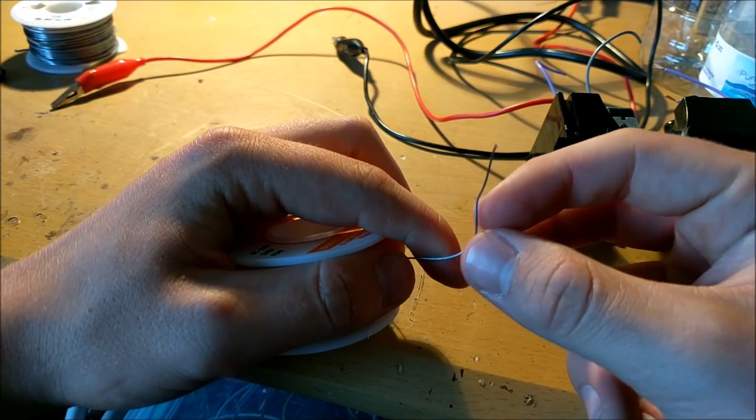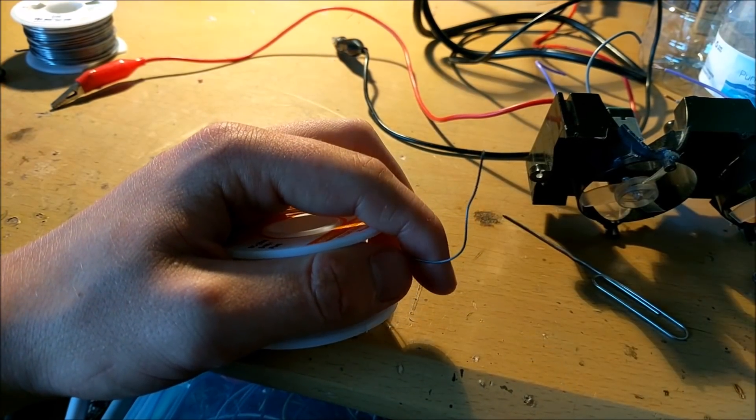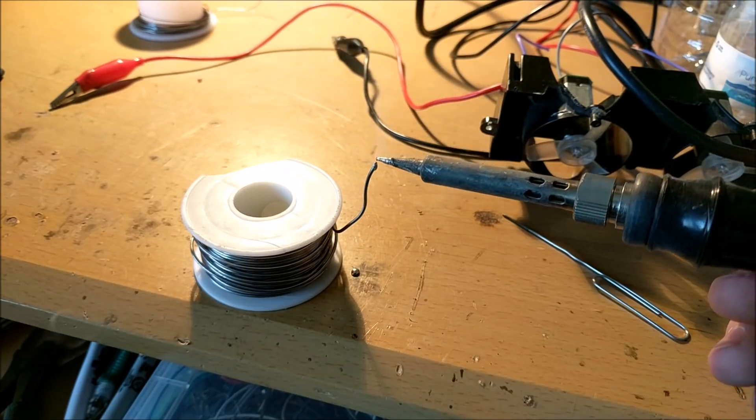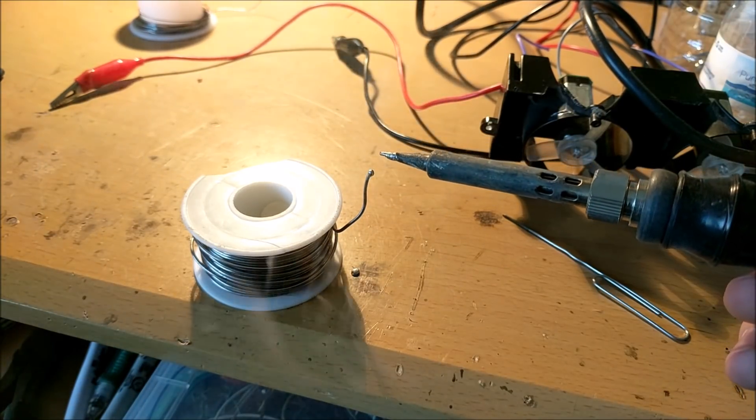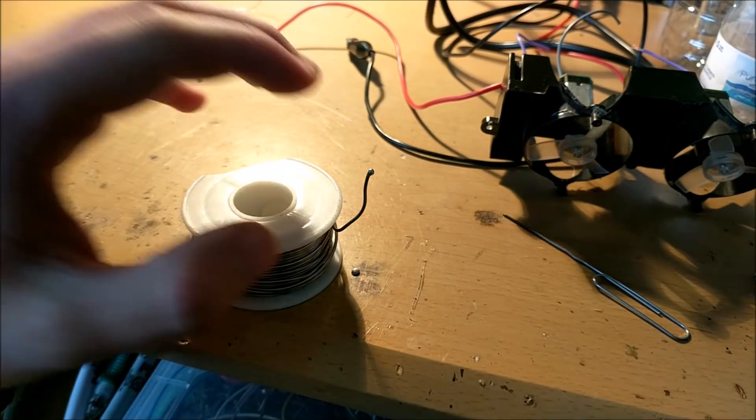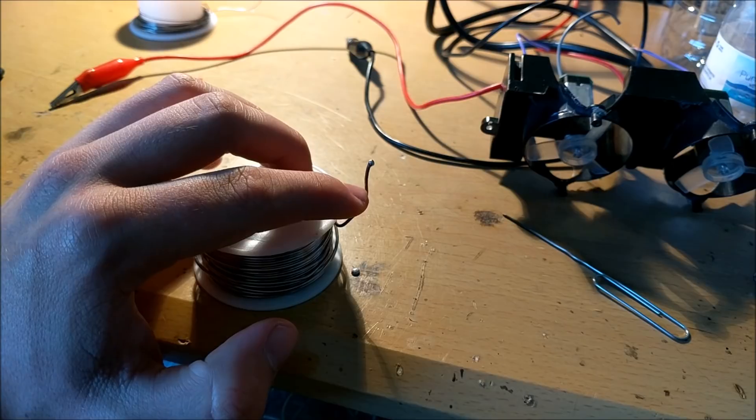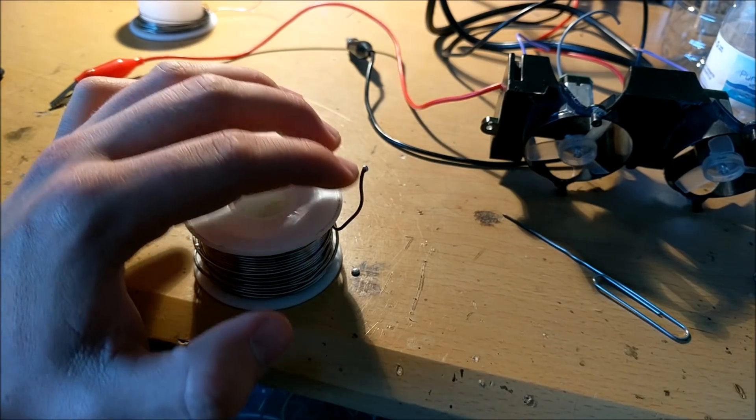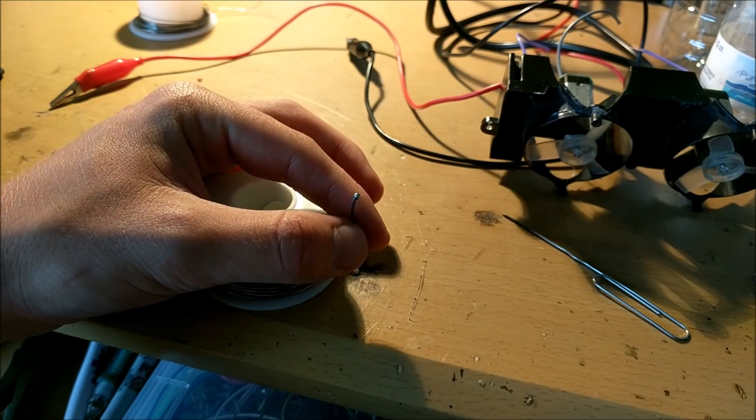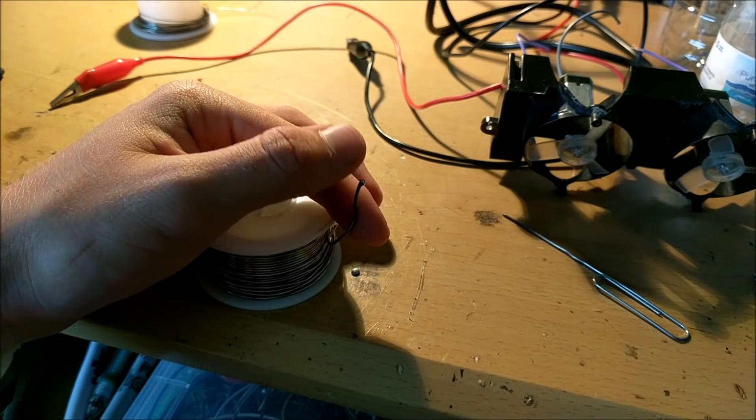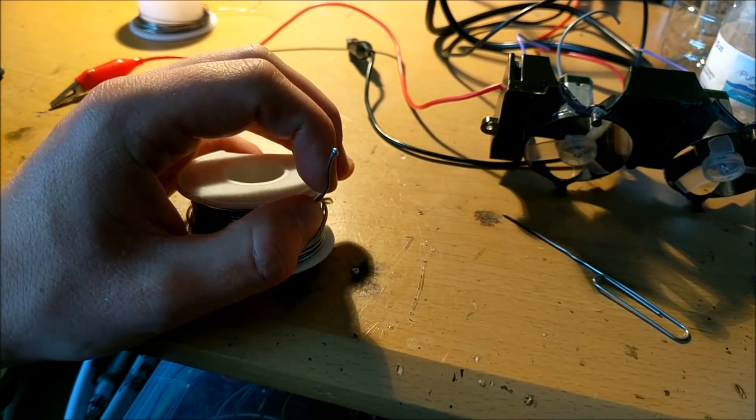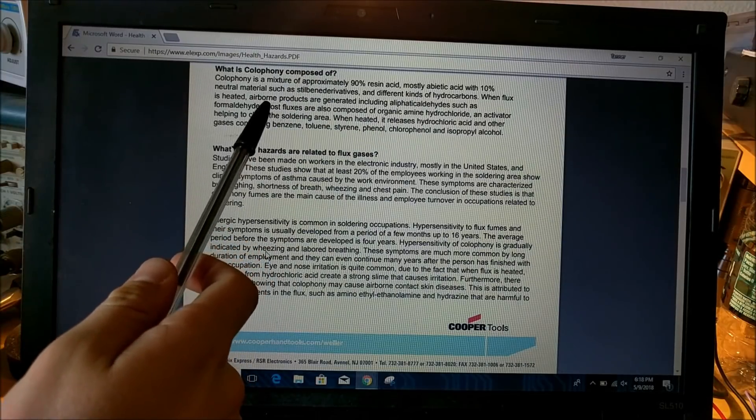But there's another danger, and that danger comes when you're actually in the process of soldering. As you can see, when you are soldering with solder, a lot of white smoke comes out of the top. Now that white smoke is not the best thing for you. That white smoke is the smoke that comes when the soldering iron heats up the rosin inside the solder. That rosin acts like a flux to make the solder stick better to certain things.